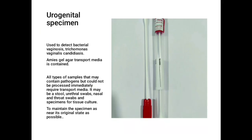The urogenital specimen tube has Amies gel agar, which is a transport media. It is mostly used to detect bacterial vaginosis, Trichomonas vaginalis, and Candida. Most samples that are not processed immediately require a transport media.